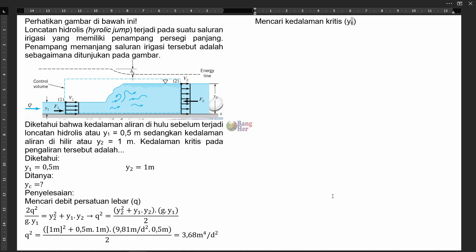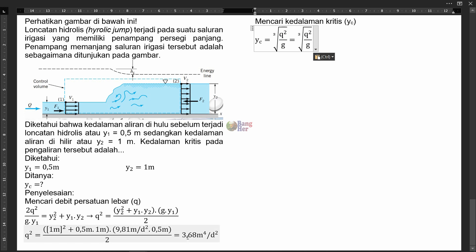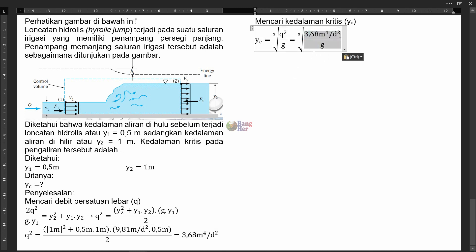Terakhir, kita mencari berapa kedalaman kritisnya. Kedalaman kritis YC dicari dengan persamaan: YC = ∛(q²/g). Di sini kita lihat ada q², itulah alasan kenapa tadi kita tidak menyederhanakan ke q saja, karena q² akan langsung dipakai tanpa harus dikuadratkan lagi.